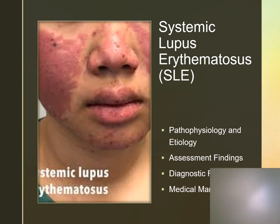Systemic lupus erythematosus, or SLE, or lupus, is an autoimmune disease that involves connective tissue and chronic inflammation. It affects the skin, joints, kidneys, heart, lungs, brain, and lymph nodes. There is an unknown triggering mechanism, but we see destruction of diffuse connective tissues, and it's also called the great imitator. Hormonal factors, strong family history, stress, sunlight, viruses, and cigarette smoking may be involved in the cause.